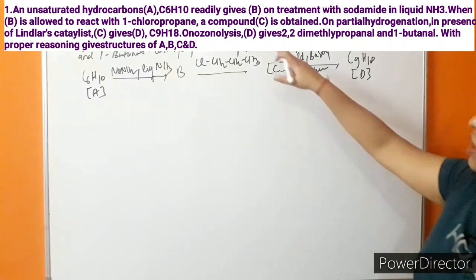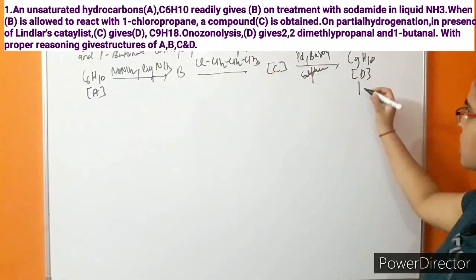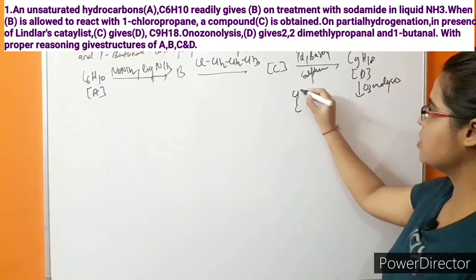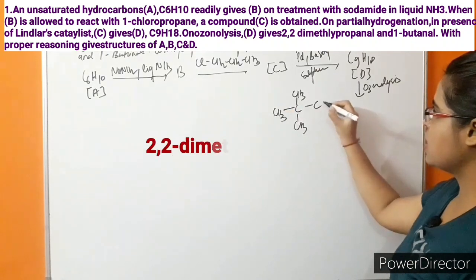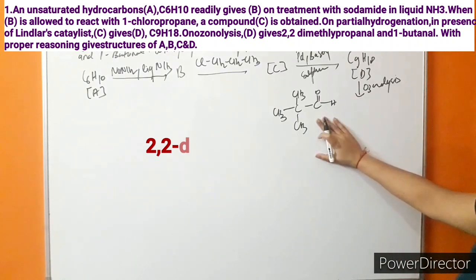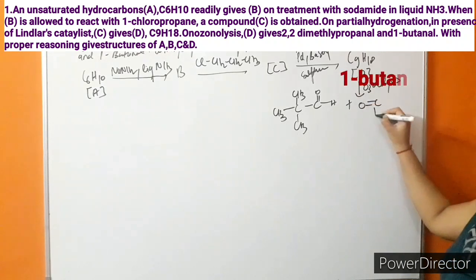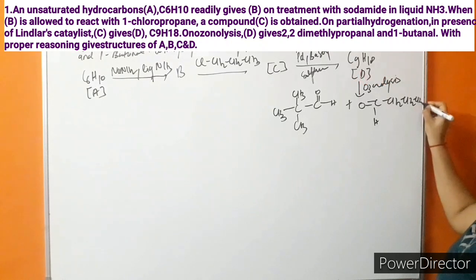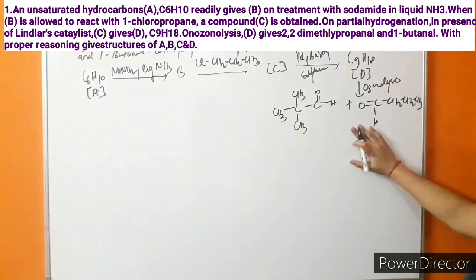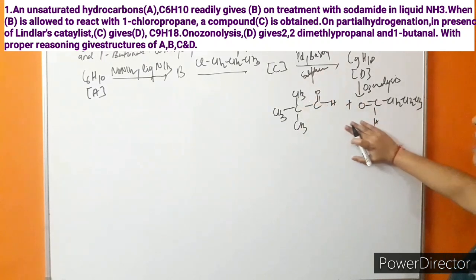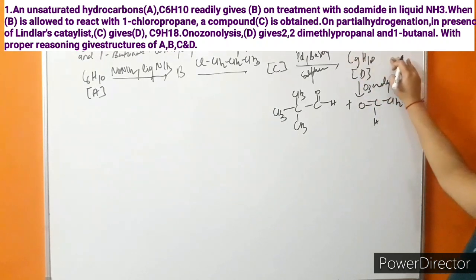Further, on ozonolysis of compound D, there is formation of two compounds: one is 2,2-dimethylpropanal, which has the formula (CH3)3C-CHO, and the other is 1-butanal, which is OHC-CH2-CH2-CH3. These are the hints given in the question. By combining these ozonolysis products, we can identify compound D. If we remove the oxygen of the carbonyls, there will be double bond formation between these two carbons.